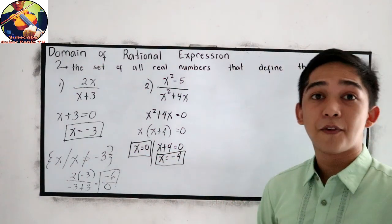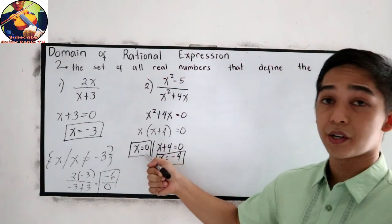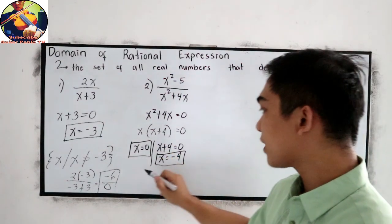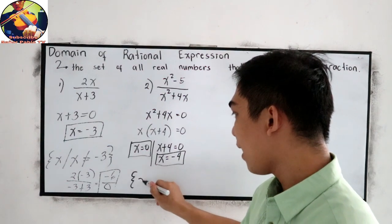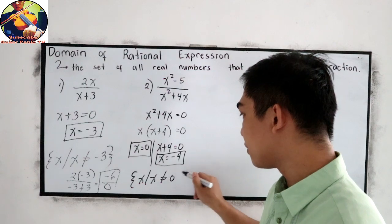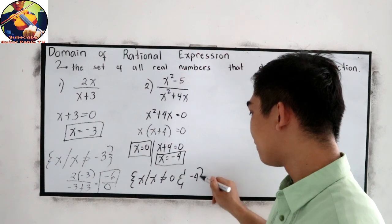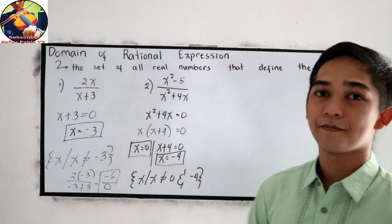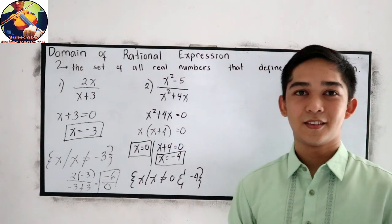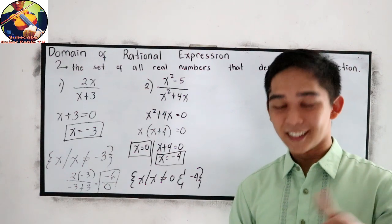The restricted values now are negative 4 and 0. So let us write our domain: x such that x is not equal to 0 and negative 4.